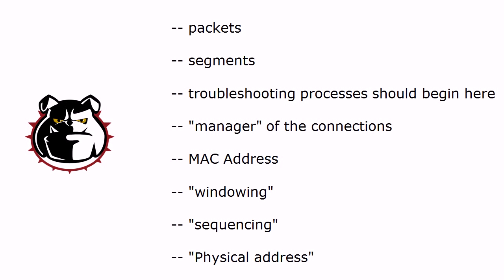Watch this last one, because I fell for this when I started my studies. You see 'physical address' and you think 'physical layer' — but physical address is another name for the MAC address, because it physically exists on the network card. So the physical address is actually found at the data link layer of the OSI model. To recap: packets are at the network layer, segments at the transport layer, start troubleshooting at the physical layer, the manager of the connections is the session layer, MAC addresses at data link, windowing and sequencing at the transport layer, and physical address at the data link layer.